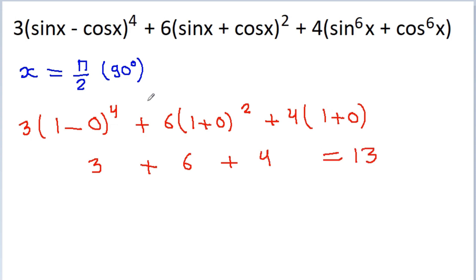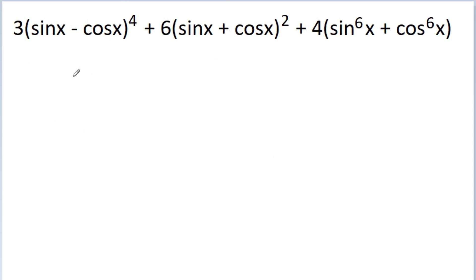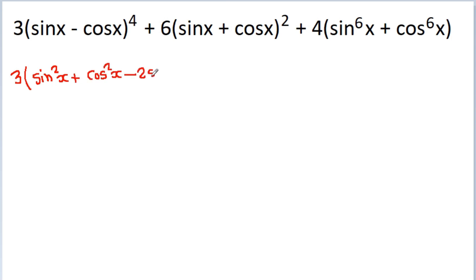But we also need to verify this for a general value of x. If we try to open the brackets, the power 4 can be written as 2 into 2. So (sin x minus cos x)² expands to sin²x plus cos²x minus 2 sin x cos x, which equals 1 minus 2 sin x cos x.